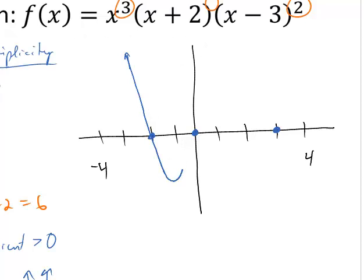Now as I approach 0, I have multiplicity 3. So it's going to come up, flatten out, and continue increasing. Go up for a while and then come back down.